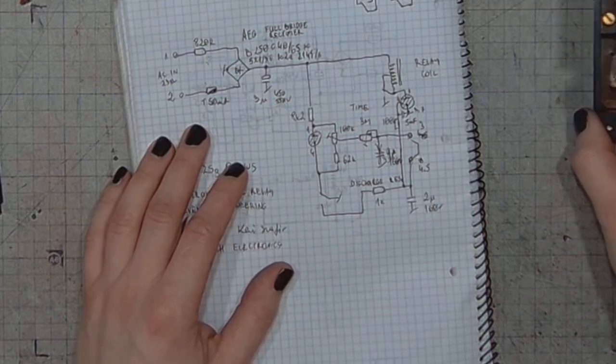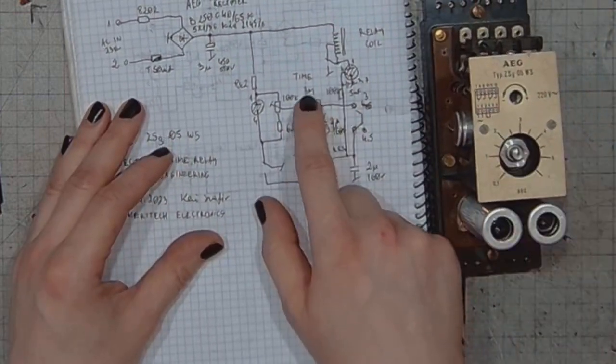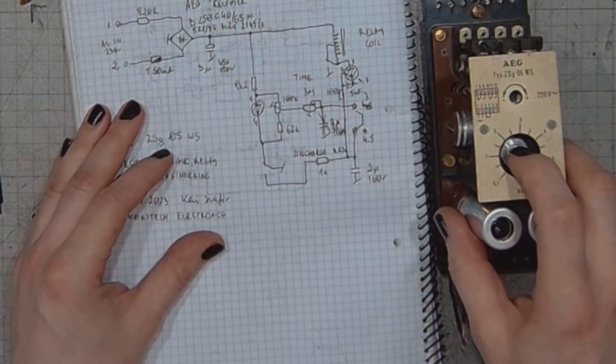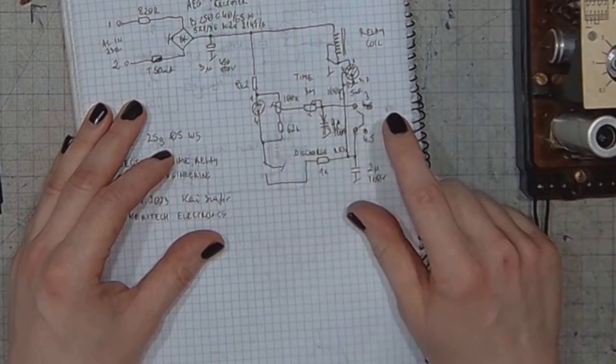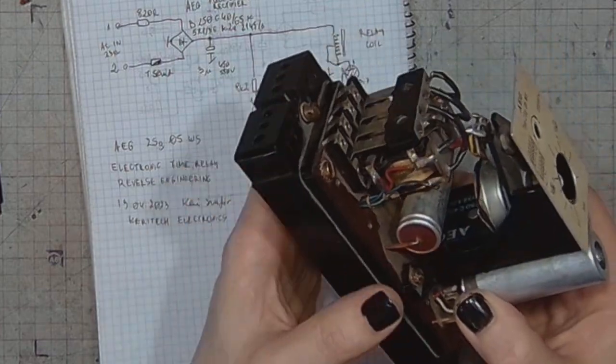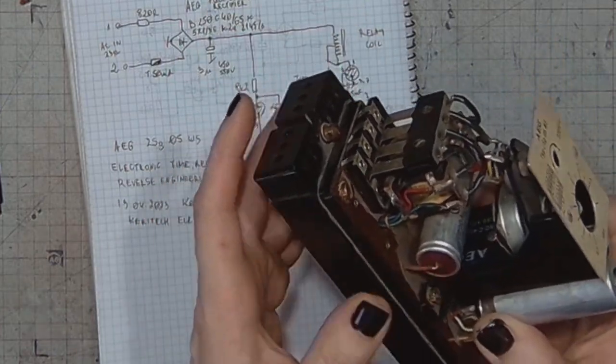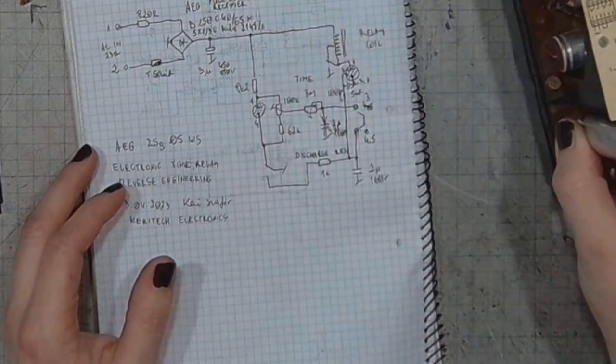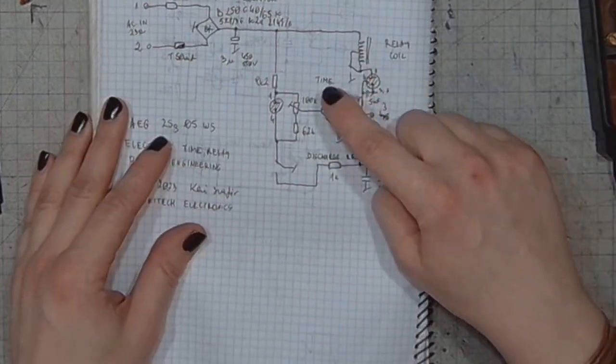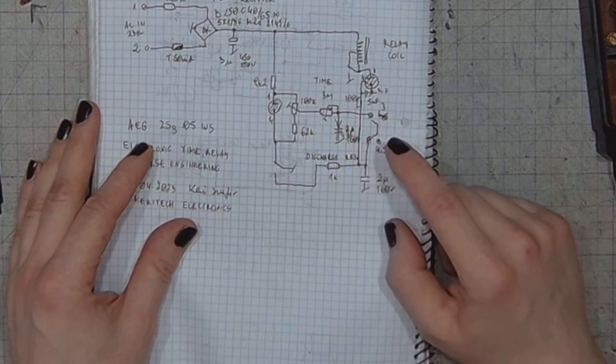And the big potentiometer, something like 3 mega ohms, together with the 2 microfarad capacitor forms a time constant circuit.